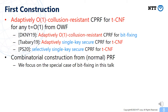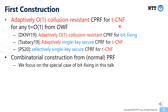Our first construction is adaptively unbounded-collusion-resistant CPRF for T-CNF for any constant T from one-way functions. As a historical note, in the first version of our work we constructed adaptively unbounded-collusion-resistant CPRF for the smaller class of bit-fixing. Tabori then observed that we can trade collusion-resistance for functionality to achieve single-key security for T-CNF. In the current version, we take both advantages: our CPRF is unbounded-collusion-resistant and simultaneously supports T-CNF functionality.